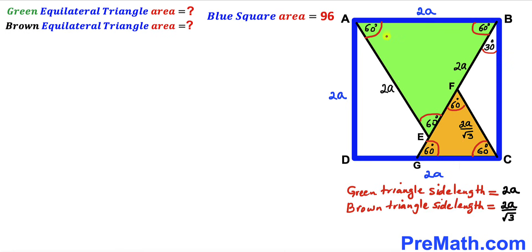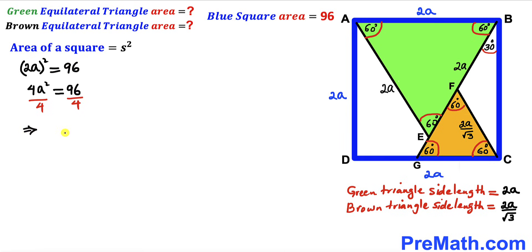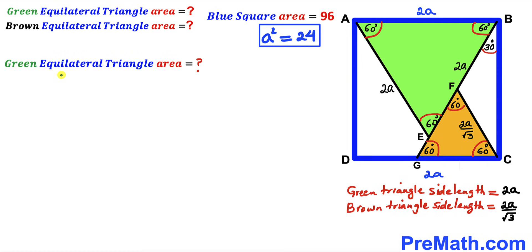Now we focus on the blue square ABCD, whose area is given as 96 square units. Recalling the area of a square formula: Area = s², where s is the side length. In our case the side length is 2a and the area is 96, so (2a)² = 96. Therefore a² = 24.